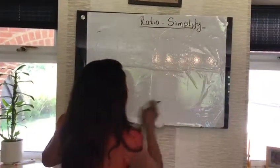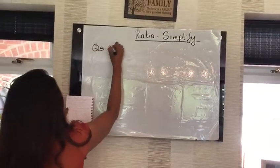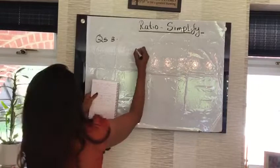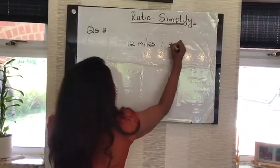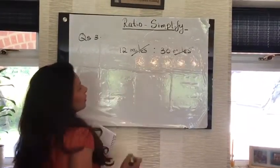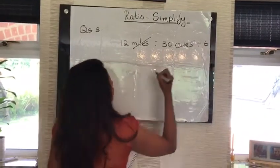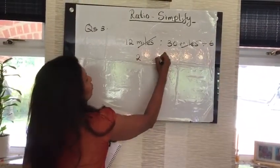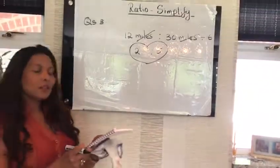For an example, I'm going to show you question number 3, third one in question number 3. I'm going to say 12 miles to 30 miles. We can cancel miles and miles. Now, I'm going to divide both of them by my common number 6. 2 to 5 is the final answer.